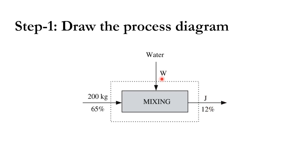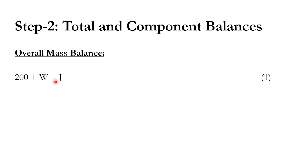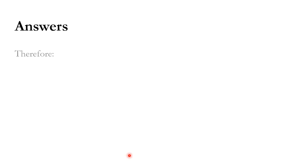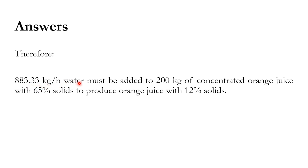We do not know j or w, but the process is straightforward. The total balance gives: 200 + w = j. For the soluble solids mass balance: 200 × 0.65 = 0.12 × j, since water carries no soluble solids. Solving, j = 1083.33 kg and w = 883.33 kg. Therefore, 883.33 kg of water must be added to 200 kg of concentrated orange juice with 65% solids to produce orange juice with 12% solids.